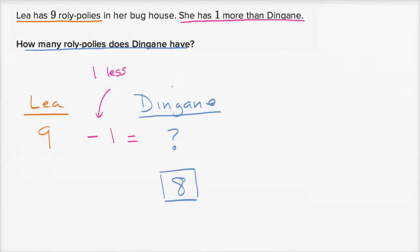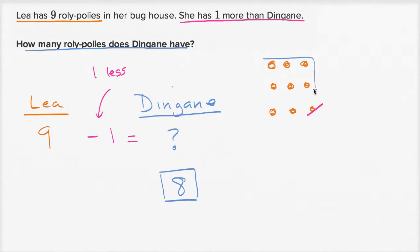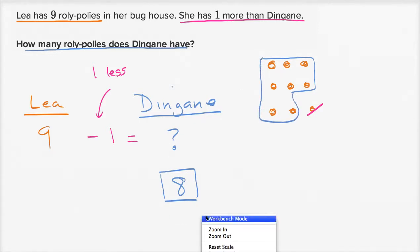Another way you could have done it: you could have drawn Leah's roly-polies — one, two, three, four, five, six, seven, eight, nine — and those would have been them rolled up. And you say, okay, that's one more than Dingane, so Dingane has one less than this. So you just take away one, and you're left with one, two, three, four, five, six, seven, eight. Let's do one more of these.